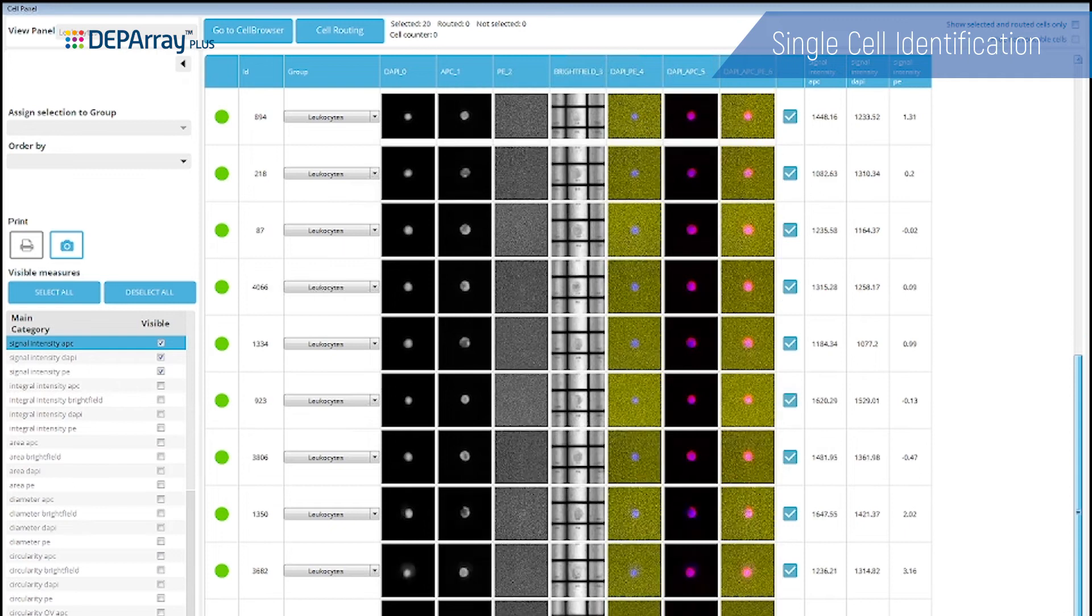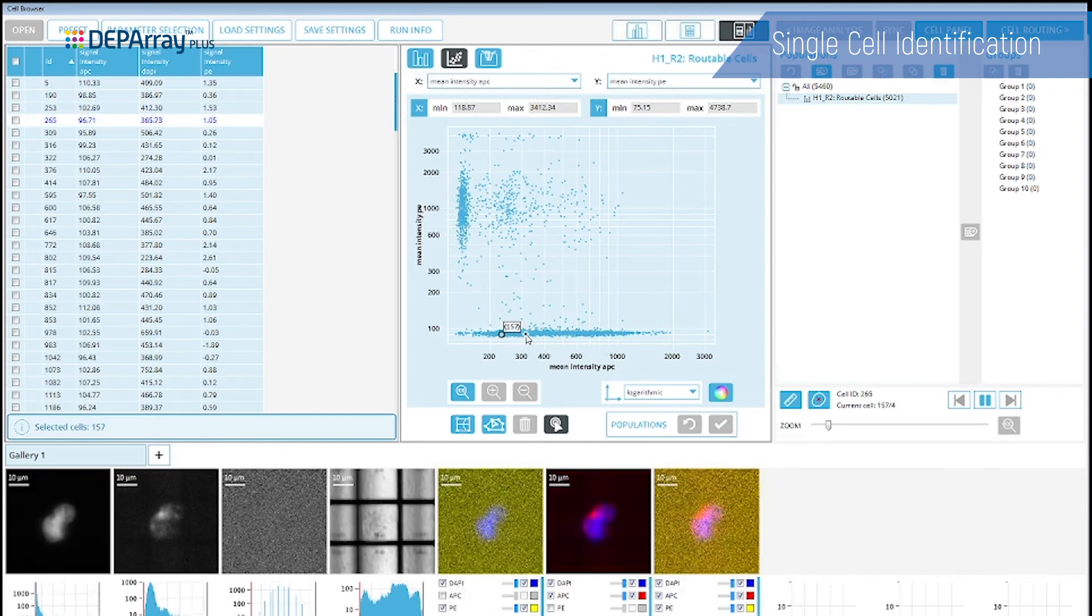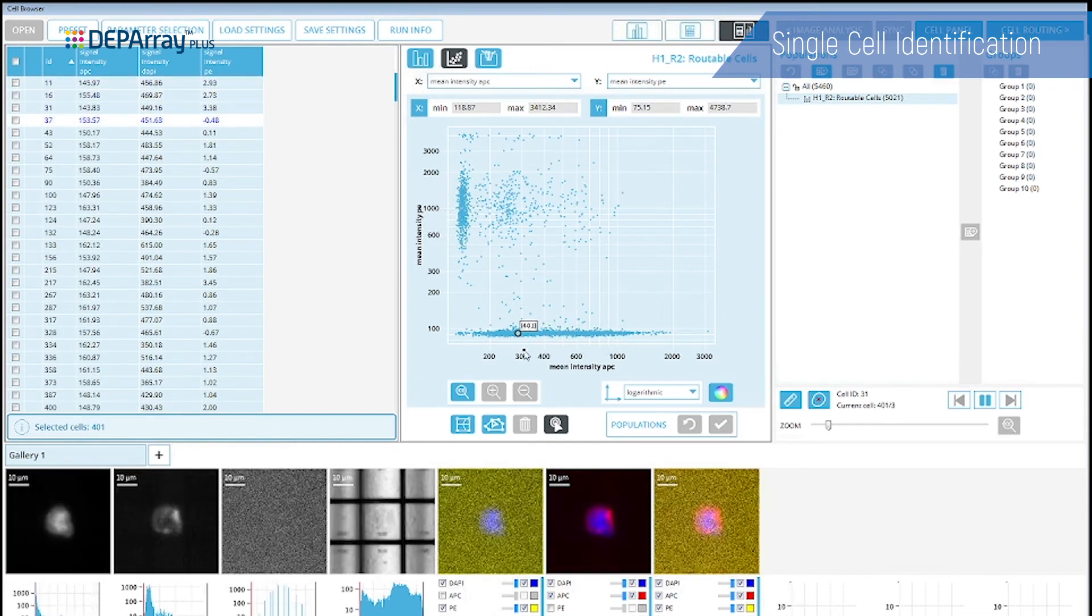Each individual cell image can be reviewed using the Cell Browser software, a powerful tool enabling selection of multiple cell populations based on multi-parametric fluorescence and brightfield criteria.